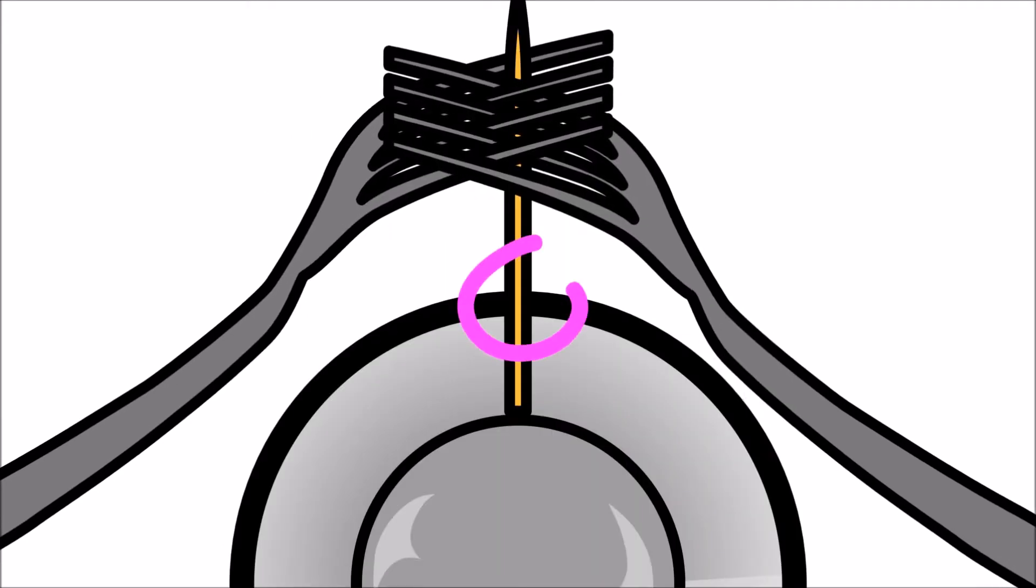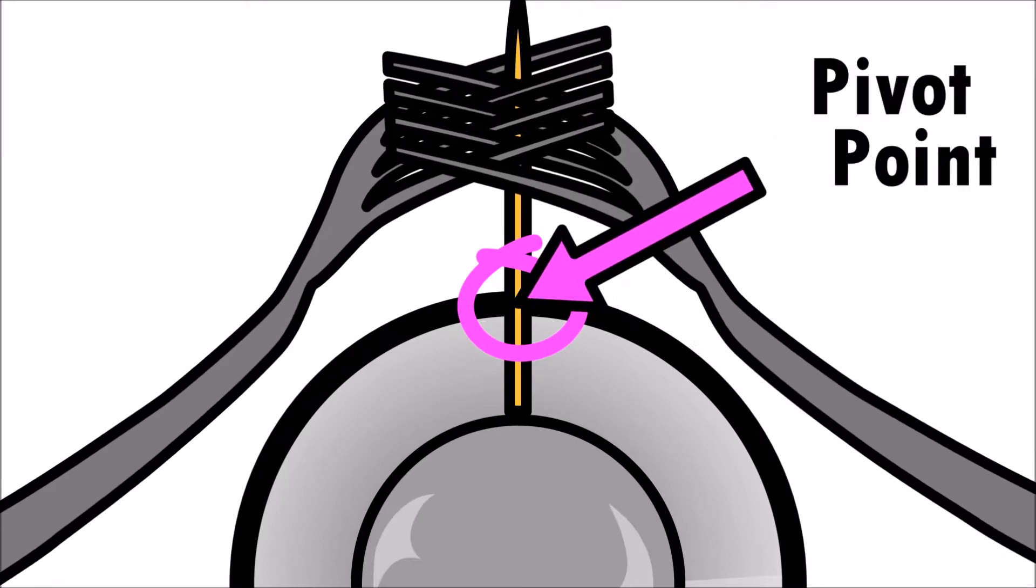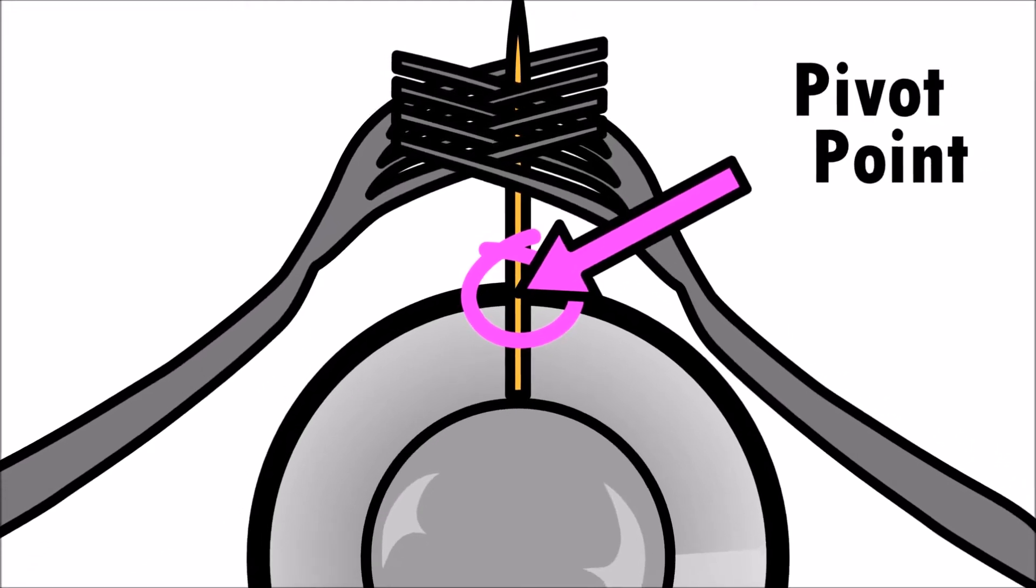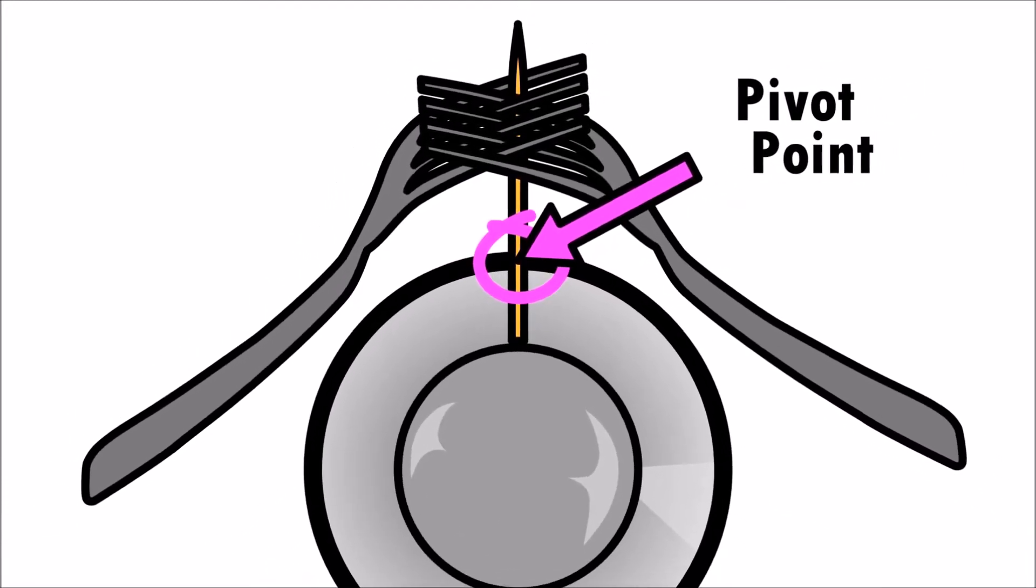Where the toothpick rests on the rim of the glass is called the pivot point. This spot is where everything balances but it's not the center of gravity.